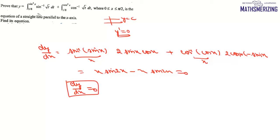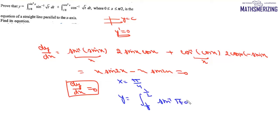Now we have to find the value of y. What we'll do is we'll find the value of y at any convenient value of x. For this question, the convenient value of x is where sin(π/4) = 1/√2, and squaring gives 1/2. We then write the integral from 1/8 to 1/2 of sin⁻¹(√t) dt, and here also we write from 1/8 to 1/2 of cos⁻¹(√t) dt.